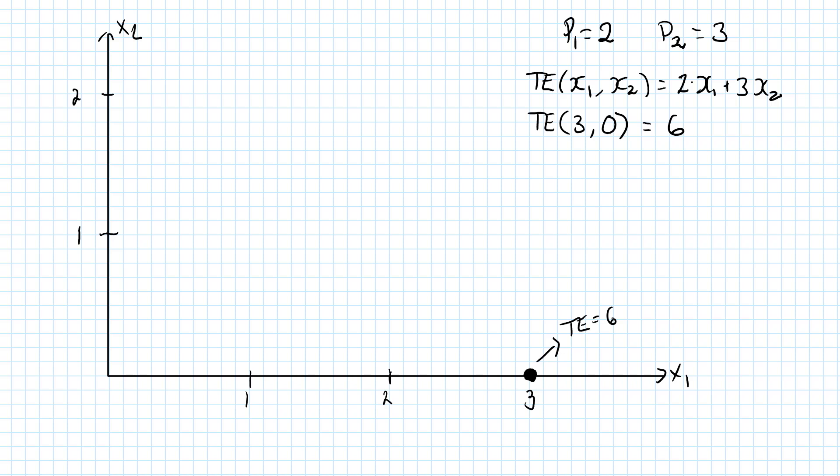There are actually a lot of them. For example, if I consume 0 units of the first good and 2 units of the second one, then the total expenditure will come out to be 6 as well, 3 times 2. So this bundle right over here, where X1 is 0 and X2 is 2, also has a total expenditure of 6.